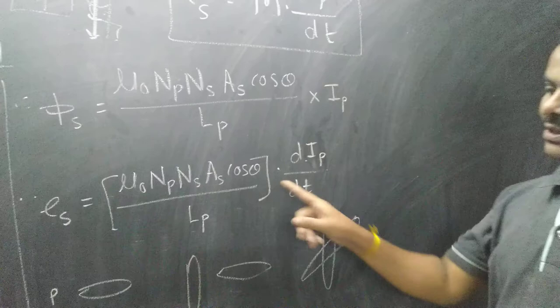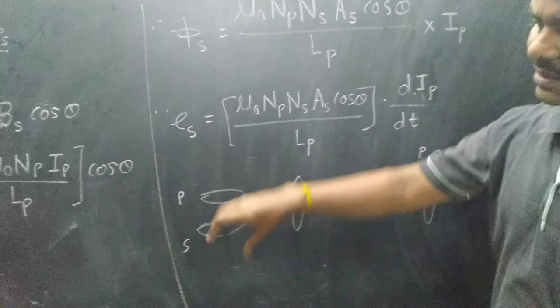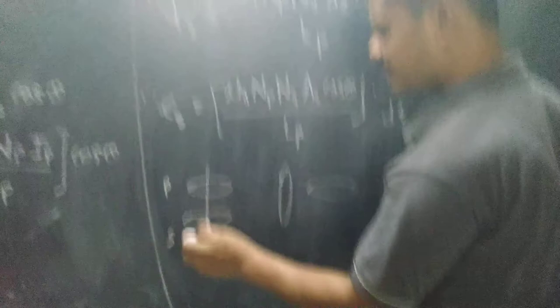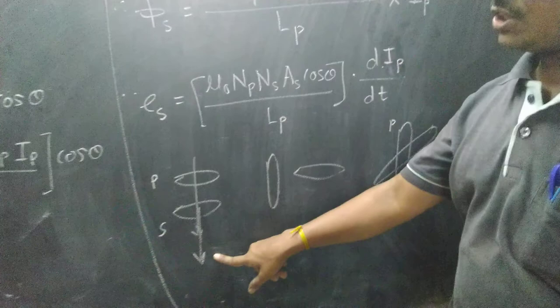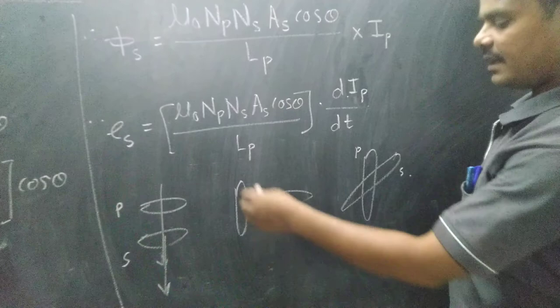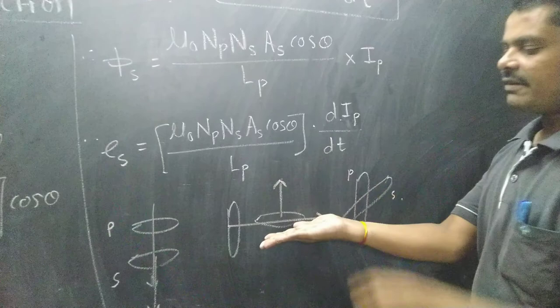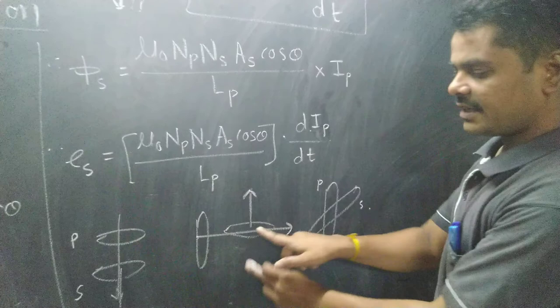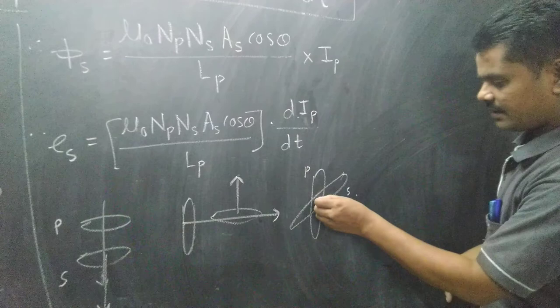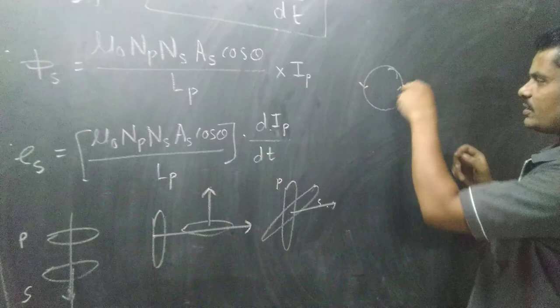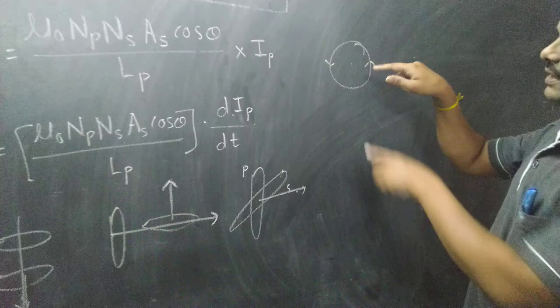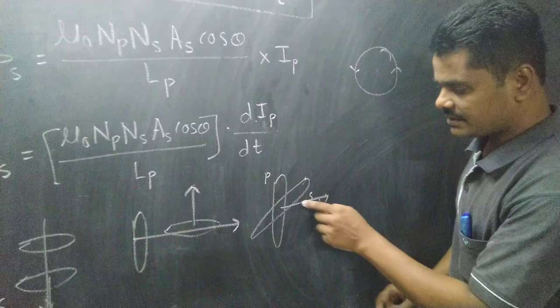Suppose this is the primary coil and this is the secondary coil. If you have to calculate, this is the magnetic field and the area is the secondary coil. The primary coil orientation is at 90 degrees. In this case, this is the secondary coil in the minus case. This is the primary coil and this is the magnetic field — anticlockwise current center, clockwise current center, magnetic field is perpendicular.